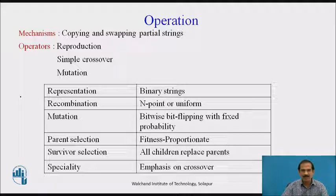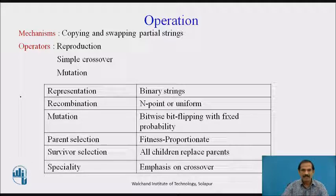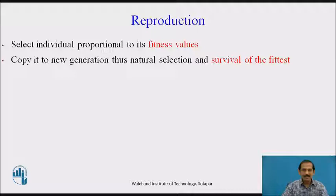Mutation takes place bitwise — bit-flipping with fixed probability. Parent selection is done based on fitness; we select the best of the population. There is survivor selection, and all children that survive replace the parents, provided the children have a better objective function. The emphasis is given on crossover. Reproduction selects individuals in proportion to their fitness, copying them to the next generation, ensuring natural selection and survival of the fittest chromosomes.